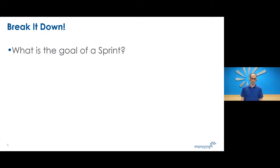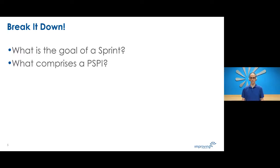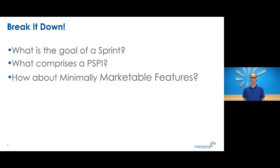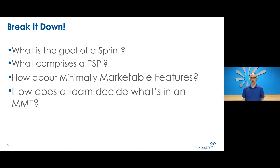Let's start with a few questions. What is the goal of a sprint? To produce a potentially shippable product increment — correct. What comprises a potentially shippable product increment? A minimally marketable feature. Thankfully, we have a special meeting that happens regularly that a team uses to determine what goes into a minimally marketable feature. These meetings, which happen several times a day, are called a Three Amigos meeting.